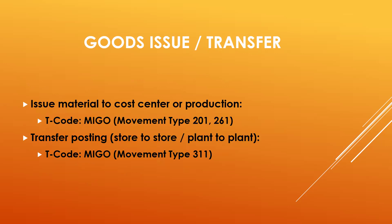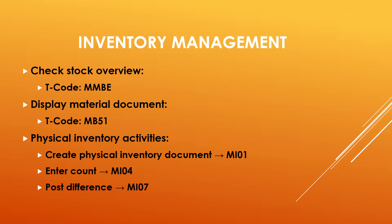End User tasks also include Stock Issues and Stock Transfer Orders. Material is issued to production using Movement Type 261. For Transfer Posting — store to store, plant to plant — Movement Types 311, 313, and 315 are used. The end user also handles Stock Transfer Orders (STO).